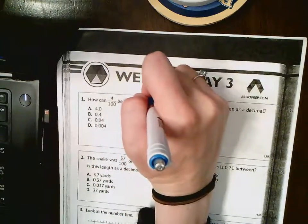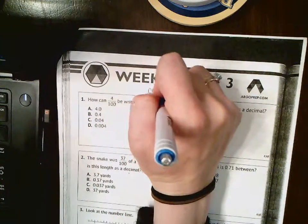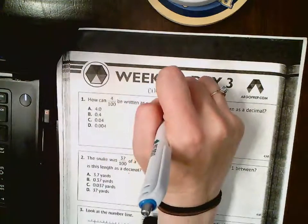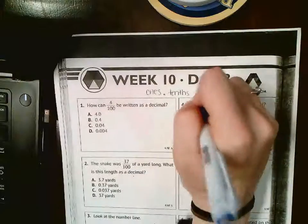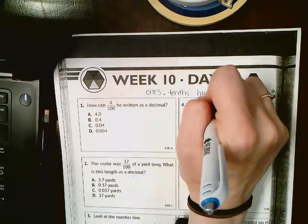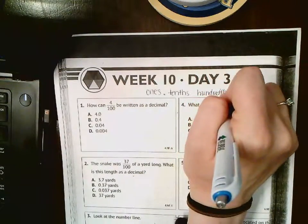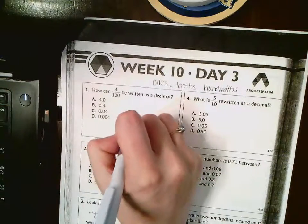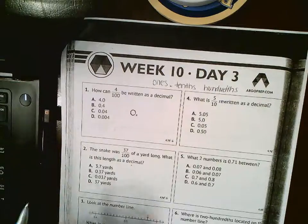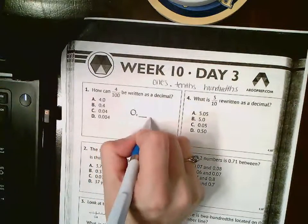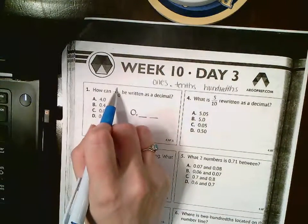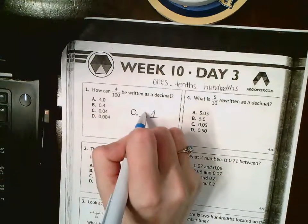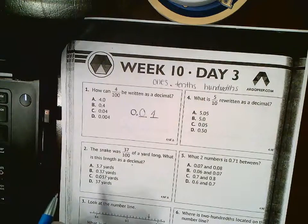I'm gonna put at the top here that I have my ones place, then my decimal point, and then it goes tenths and then hundredths. If I have 4/100, it means I don't have any ones, and then I have my tenths and my hundredths place. Well, I have 4/100, so I'm gonna put a 4 in the hundredths place, and that means I need to fill in a zero there to hold that tenths place, which matches letter C.